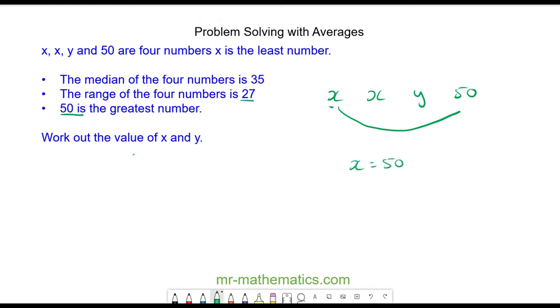So x will be equal to 50 take away 27. x will be equal to 23. So now we have 23, 23, y, and 50. We're also told the median of our four numbers is 35, and the median would go between the second and the third number. We can work out the median by calculating the average of these two numbers.